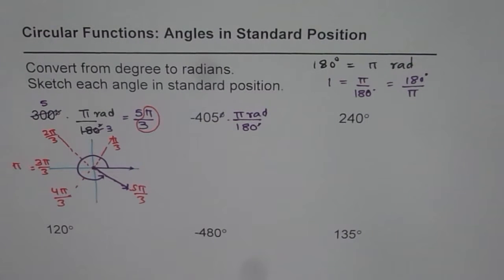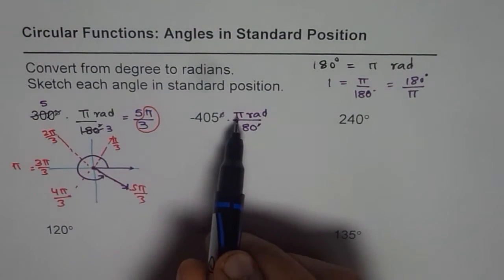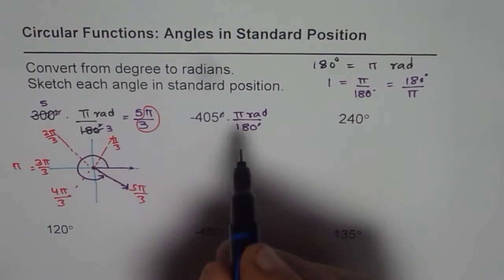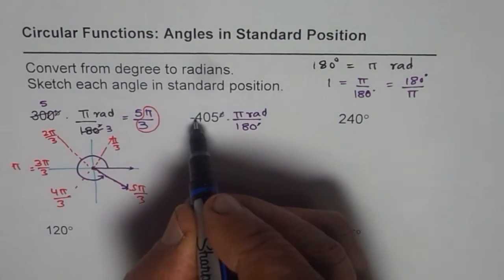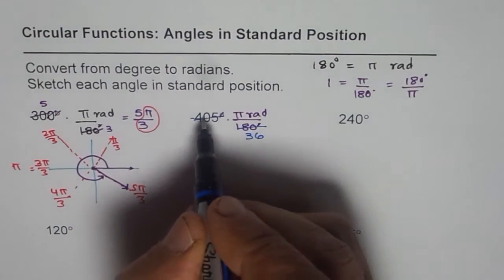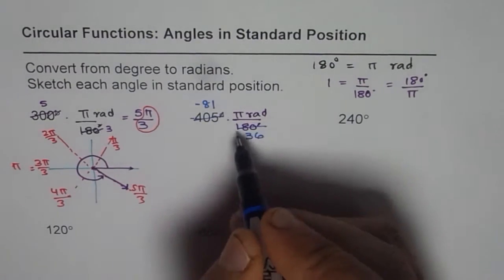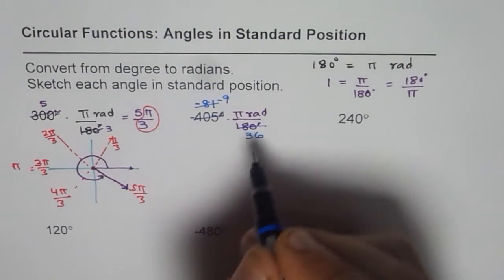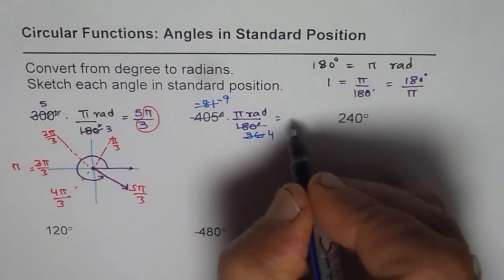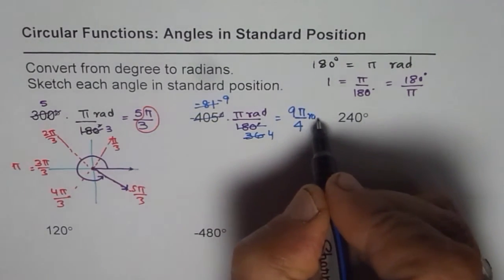Now let us do the next one. Here we have negative 405 degrees. Minus means clockwise direction. So we have to multiply by pi radius divided by 180 degrees to convert the units to radians. Let us simplify. We can divide both by 5. 5 times 81 is 405. 5 times 36 is 180. They can further be divided by 9. So we get minus 9 and this goes 4 times. So it is minus 9 pi by 4.